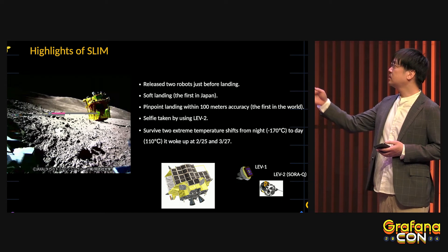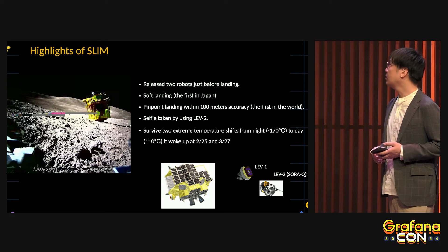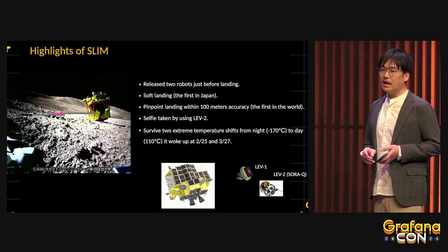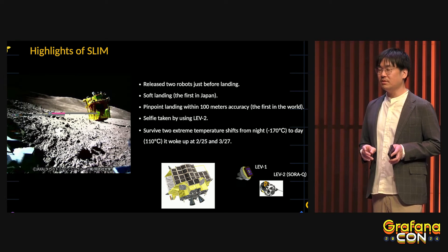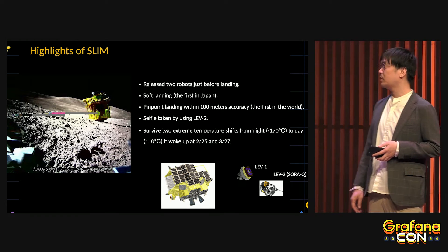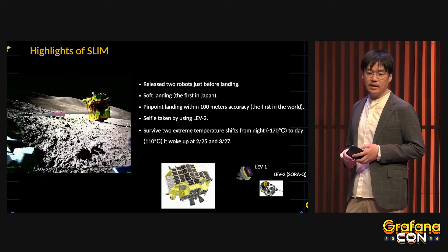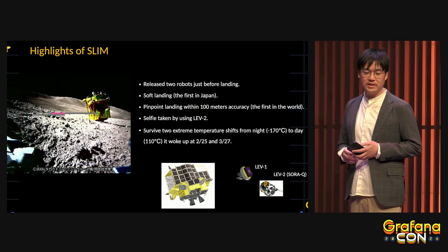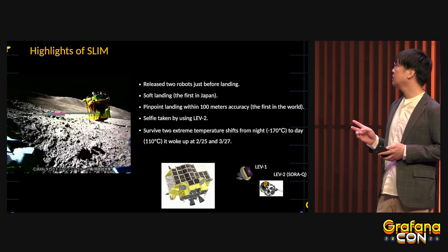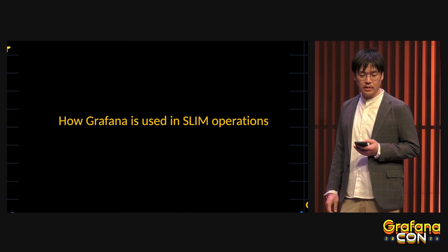Here are the highlights: just before landing, SLIM released two small robots named LEV-1 and LEV-2. This selfie was taken by robot LEV-2. Unexpectedly, SLIM also survived the extreme temperature shift from lunar night to day, waking up two more times after landing.